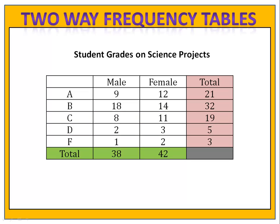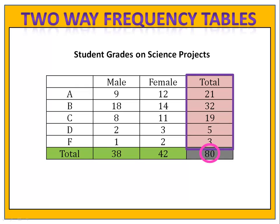If we add up the row across the bottom — thirty-eight and forty-two — that gives us a total of eighty: thirty-eight males and forty-two females. If we add the total column on the right — all the people who got A's, B's, C's, D's, and F's — that also adds up to eighty.